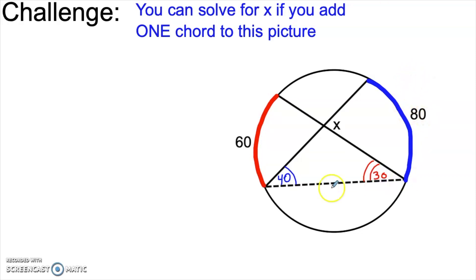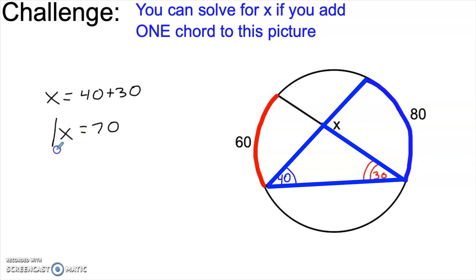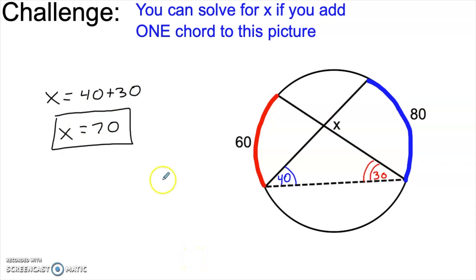Notice we haven't done anything aside from adding a chord and then using two inscribed angle relationships. But we now know enough to find the original angle X. X is an exterior angle to the triangle we created. Remember that if you extend the side of a triangle, the exterior angle is always the sum of the non-adjacent interior angles. That means X is 40 plus 30, or 70 degrees. This angle formed by two intersecting chords is actually going to be the focus of this video.